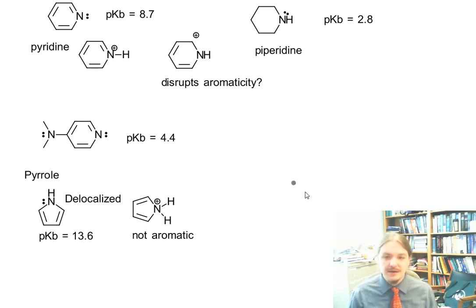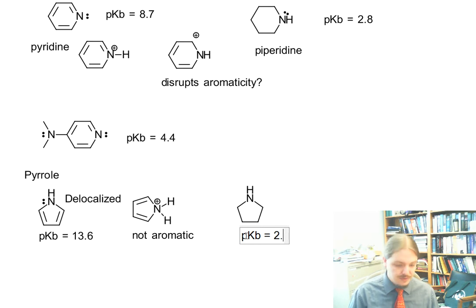By comparison, pyrrolidine, the fully saturated version of pyrrole, has a pKB of 2.7. So fairly similar to piperidine.